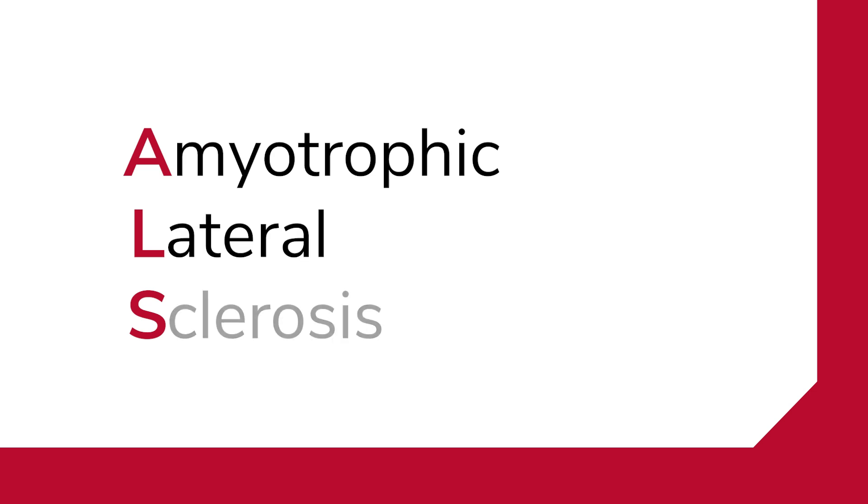ALS stands for amyotrophic lateral sclerosis. It actually has an anatomical description. Amyotrophic means muscle loss. And lateral sclerosis, believe it or not, is because there was scarring in the spinal cord back in the late 1800s in people who had ALS. When it was first described, they called it amyotrophic for muscle weakness, lateral sclerosis for this loss of neurons in the spinal cord.